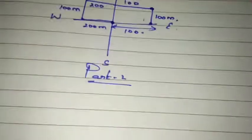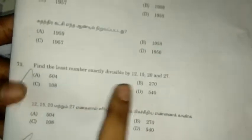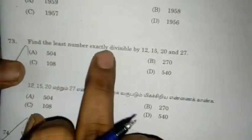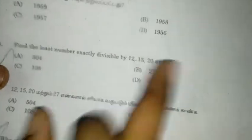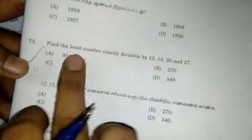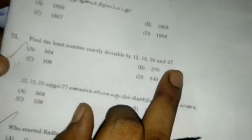Hi friends, you can find the TNBC assistant engineer question in this episode, Part 2. Find the least number exactly divisible by 12, 15, 20, 27. So, 4 numbers. This is direct LCM. If you have 4 LCM, that's the answer.